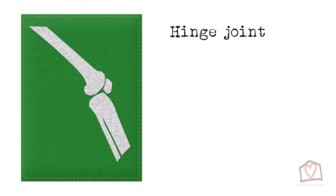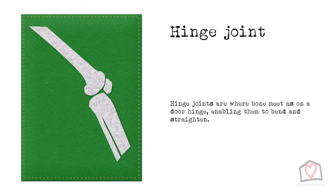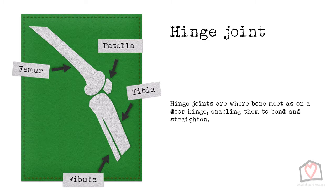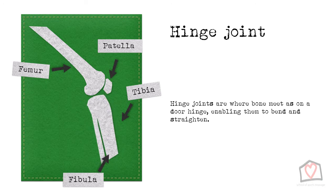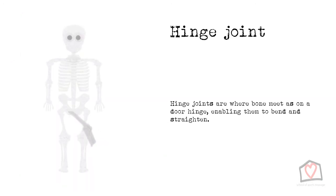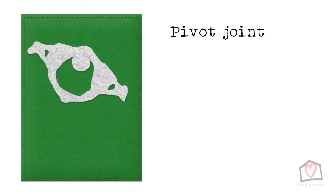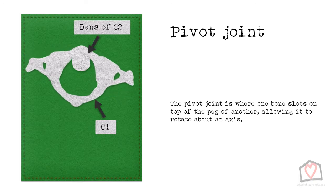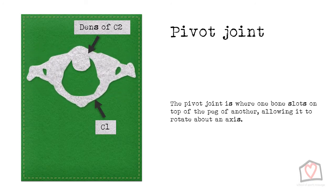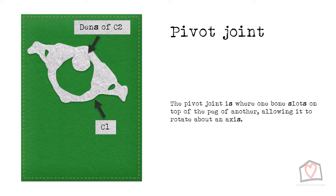The second type of joint is a hinge joint, where bones meet as on a door hinge, enabling them to bend and straighten, or flex and extend, such as at the knee or elbow. The next type is a pivot joint, where one bone effectively slots on top of the peg of another, allowing it to rotate. The atlas-axis joint, where C1 meets C2, is the best example of this. In addition, the radio-ulnar joints of the forearm are pivot joints.